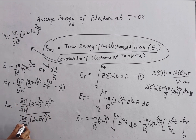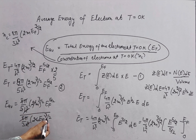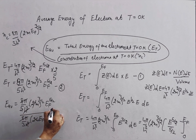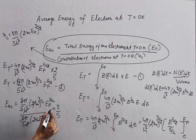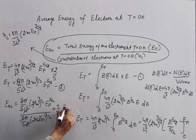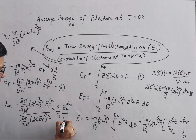Dividing ET by NC: 8π cancels with 8π, h-cube cancels with h-cube, and 2m raised to power 3 by 2 cancels with 2m raised to power 3 by 2. What remains is 3 by 5, multiplied by EF raised to power 5 by 2 upon EF raised to power 3 by 2.